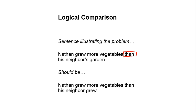In this sentence, what is being compared? The number of vegetables that Nathan grew to the number of vegetables that his neighbor's garden grew — which doesn't make sense. It's illogical. The sentence should be revised to: 'Nathan grew more vegetables than his neighbor grew.' Now 'than' is comparing the vegetables Nathan grew to the vegetables his neighbor grew.